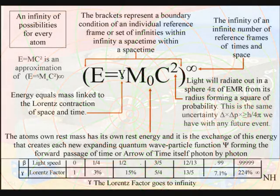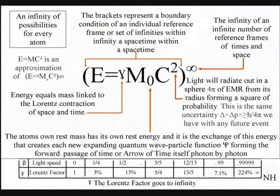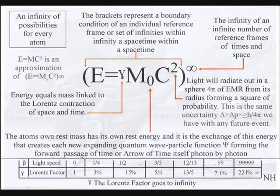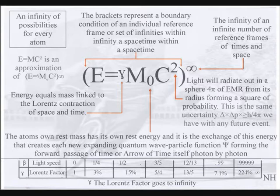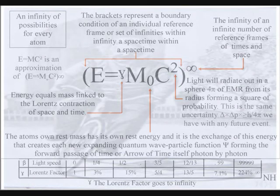This can all be based on just one equation. Energy equals mass times the speed of light squared is the most famous equation in physics, but could this equation give us an objective understanding of the universe? All we have to do is place the Lorentz contraction of space and time between the energy and mass.